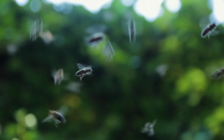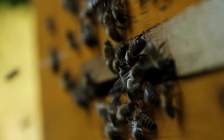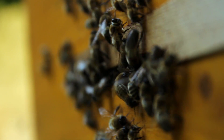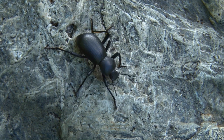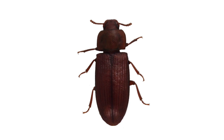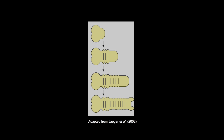All insects have segmented body plans, and they make those segments when they are still developing embryos. The first, more ancestral way is to make them one by one, or sequentially, adding one segment after another.